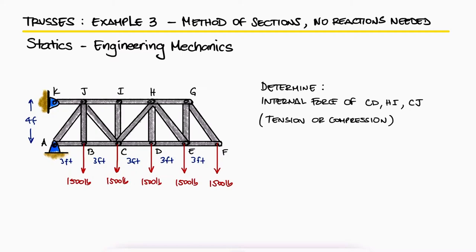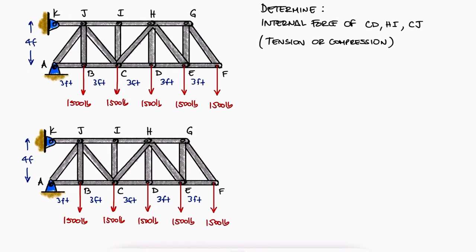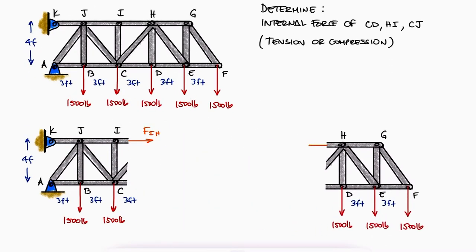Since we're only interested in finding some internal forces and not all, it makes sense to use the method of sections. Additionally, the members we're interested in finding their internal force can all be found by performing only one cut.